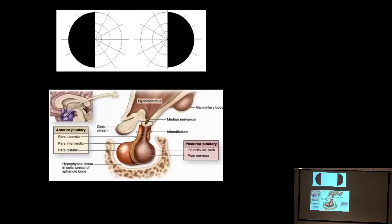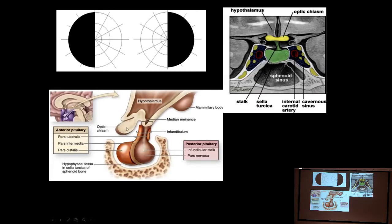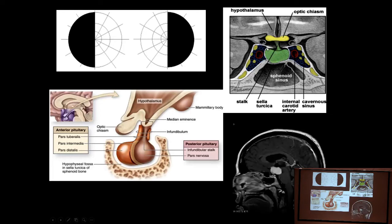It's a bitemporal hemianopsia from pituitary tumors compressing the optic chiasm. Notice here that the internal carotid artery is very close to the chiasm — an aneurysm could affect that — and the pituitary is even closer. Here's a child with a mass in this area: that is a craniopharyngioma.